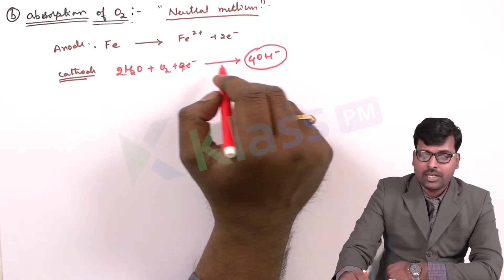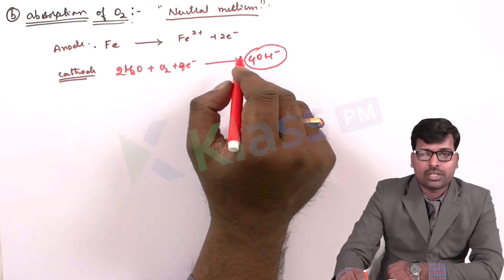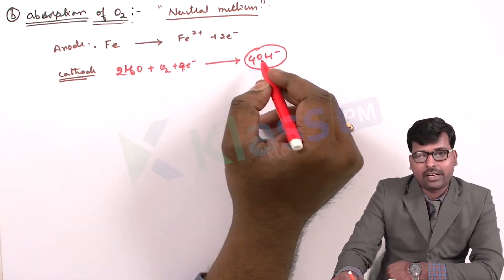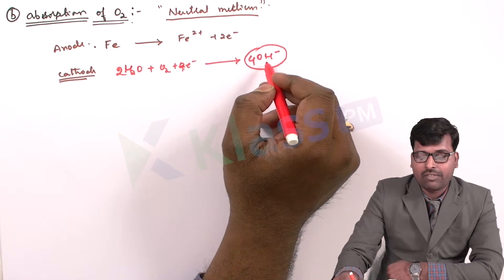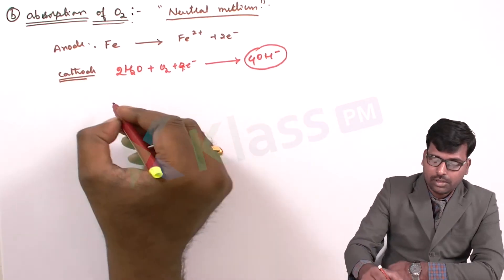Okay, so the Fe2+ thus formed will travel through the surrounding environment like in the water. And then it will reach to the OH- to combine to form the rust. You can observe here. Same procedure.